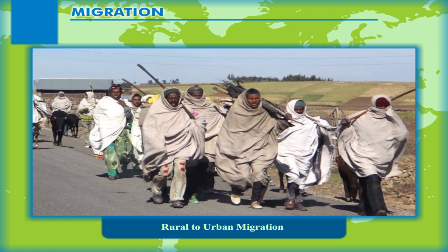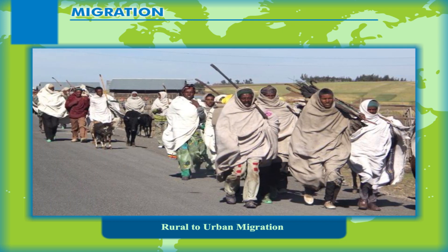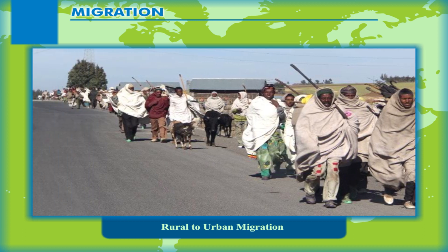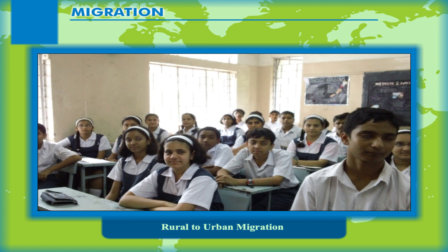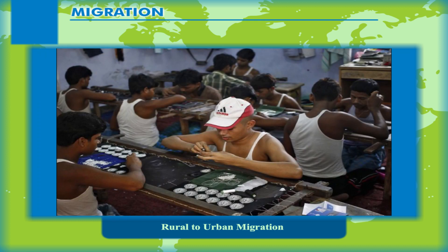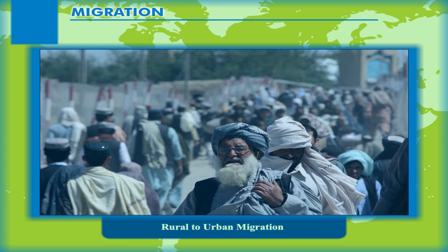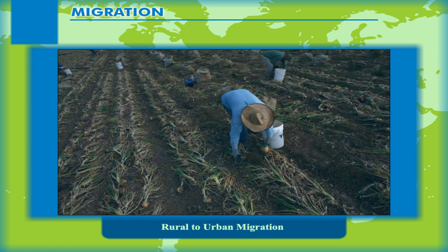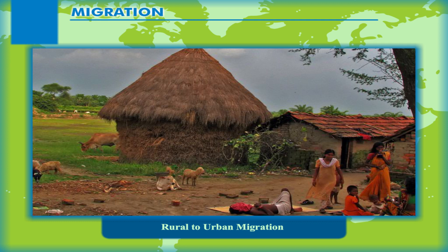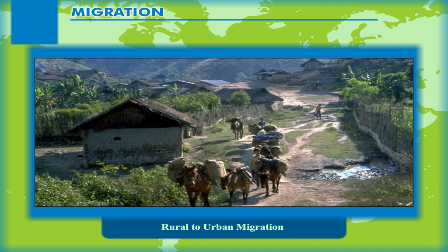Rural to urban migration is the most common feature especially in developing countries these days. As more opportunities of education, health, employment, recreation and modern lifestyle are available in towns and cities compared to rural areas, there is a regular wave of migration from villages and small hamlets to urban areas. Also, with mechanization of agriculture and change from subsistence to commercial farming, there are fewer agricultural tasks. This accelerates rural emigration, also called rural flight.